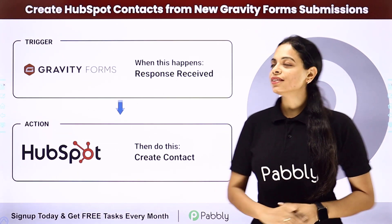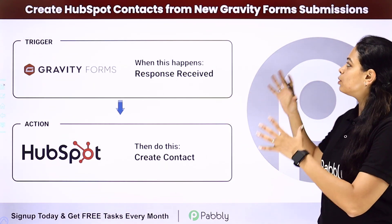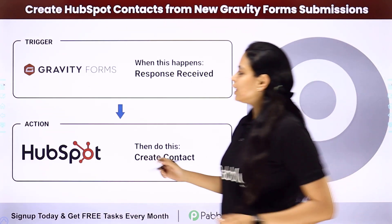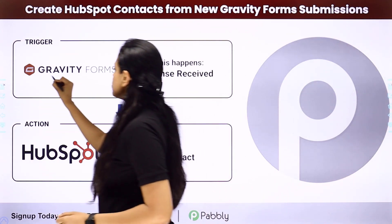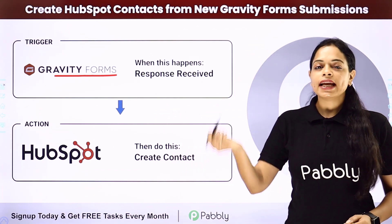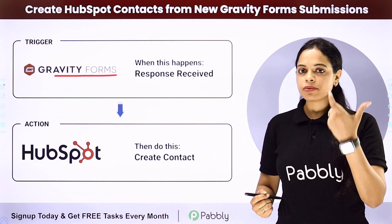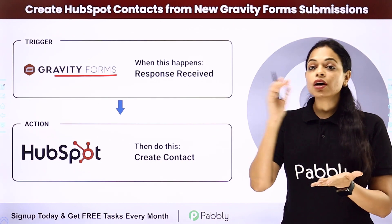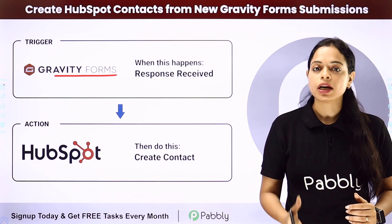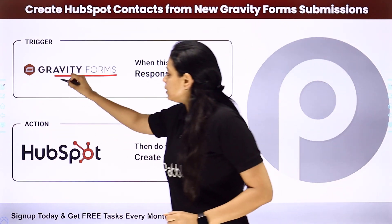In this video, we are going to understand how to create HubSpot contacts from new Gravity Forms submissions. We know that Gravity Forms is a plugin of WordPress, and here we want every time a new response is received — so you have received some information of the user — with that information, you want to create a contact in your HubSpot, which is a CRM.